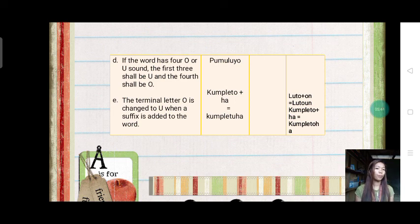The example here in Hiligaynon, the kompletuha. Kompletu plus ha equals kompletuha. So last syllable o, yung paliwaan hin, letter u. In our first language, the example is luto plus the suffix on.